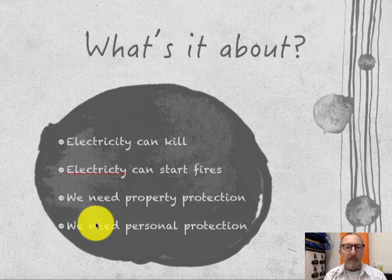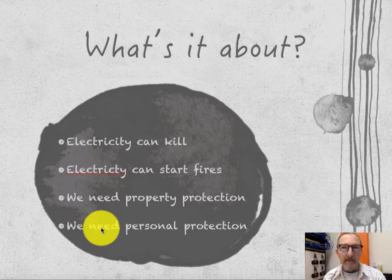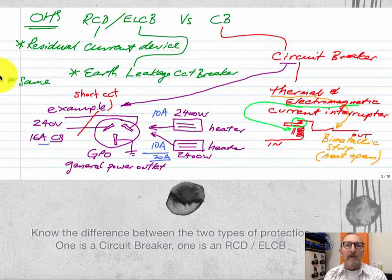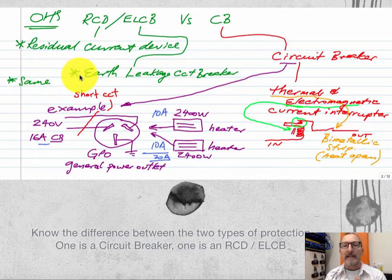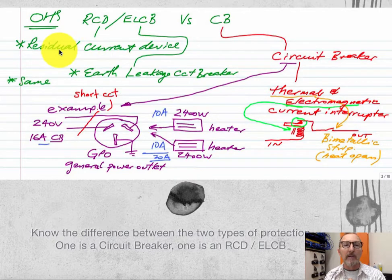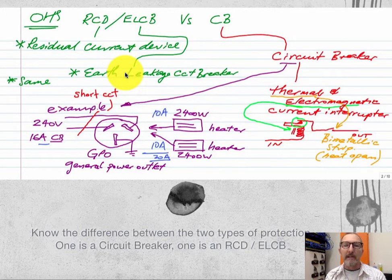We also need to protect human life against electrocution, and that's a little bit different from a circuit breaker. This is an RCD or ELCB device. So: RCD — residual current device; ELCB — earth leakage circuit breaker. They're essentially the same. The principle of operation is a little bit different, but the outcome for each is the same — they are designed to stop people from being electrocuted.